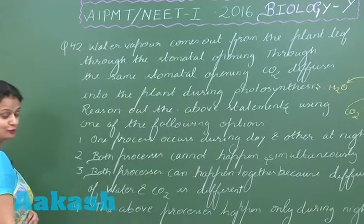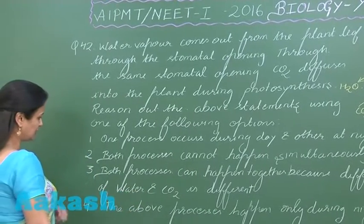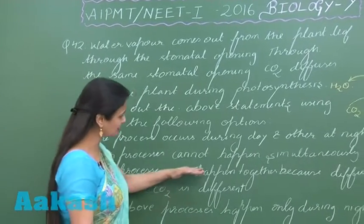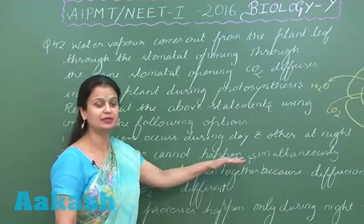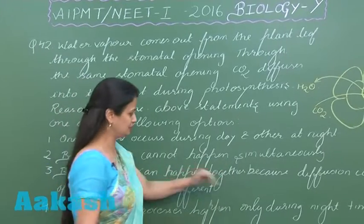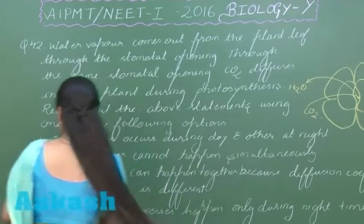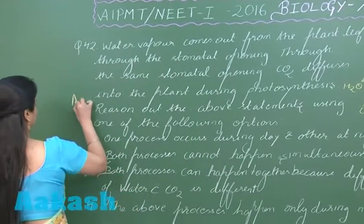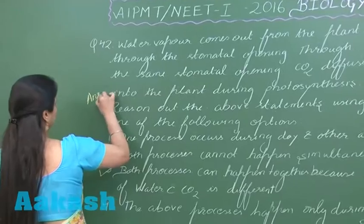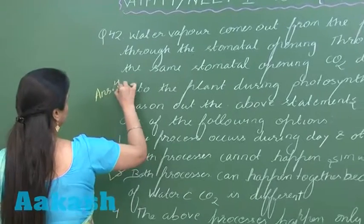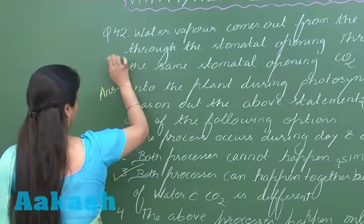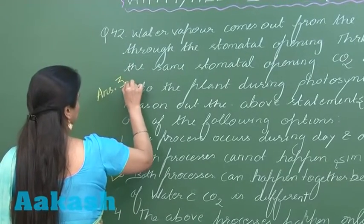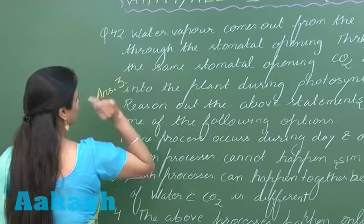So we have to look for the right option here — both processes can happen together. This is the right option for question number 42, that is option number 3.